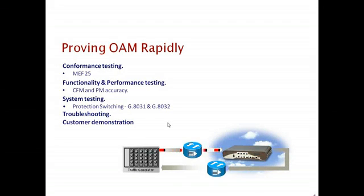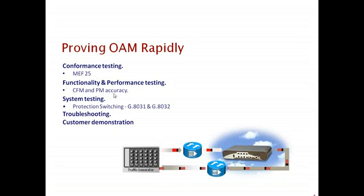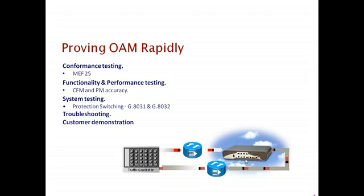To summarize the test features of the Paragon X product from Calnex Solutions: conformance of OAM standards; the functionality and performance of the OAM, illustrated for example by connectivity, fault management, and performance monitoring accuracy. For example, performance monitoring could measure frame loss — the Paragon could create a very specific frame loss and a very specific message to check the accuracy of the performance monitoring of the OAM.